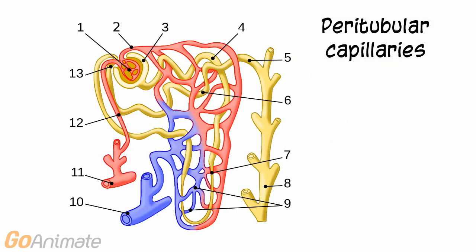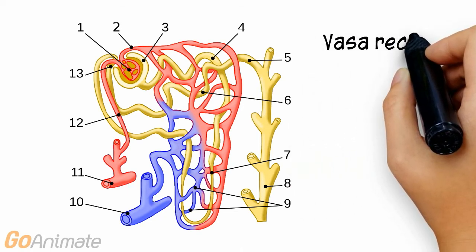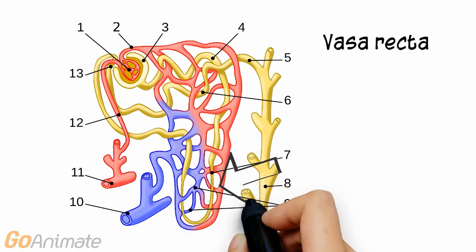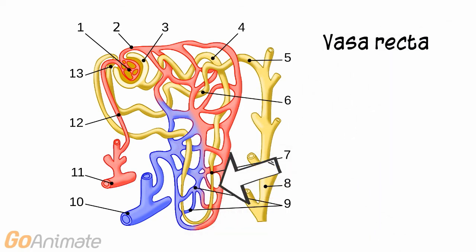The nephron is surrounded by peritubular capillaries. Capillaries surrounding the nephron loop are called vasa recta.